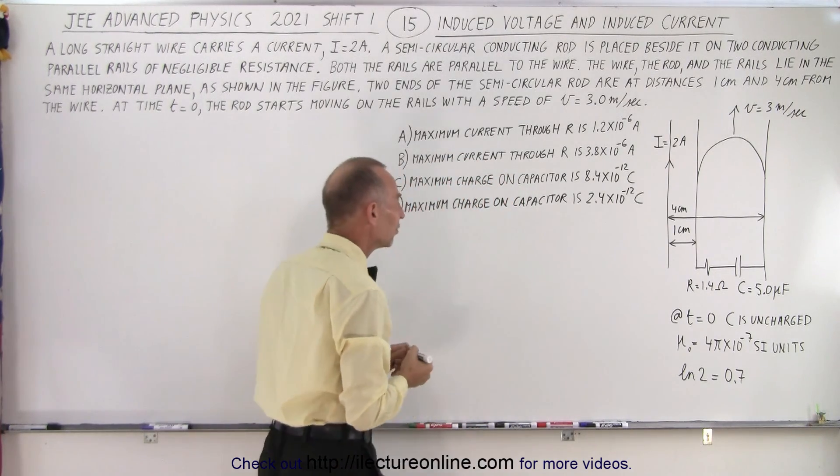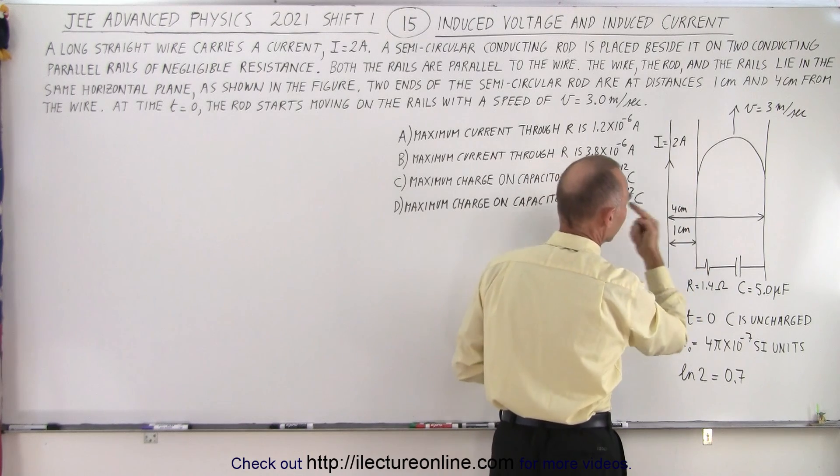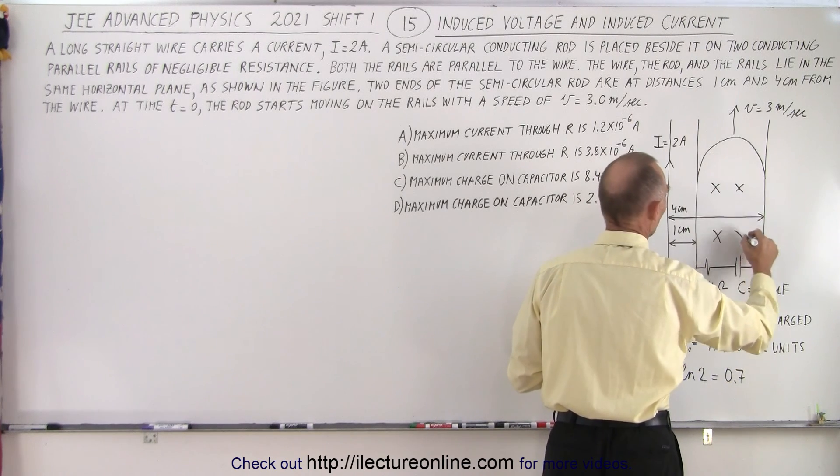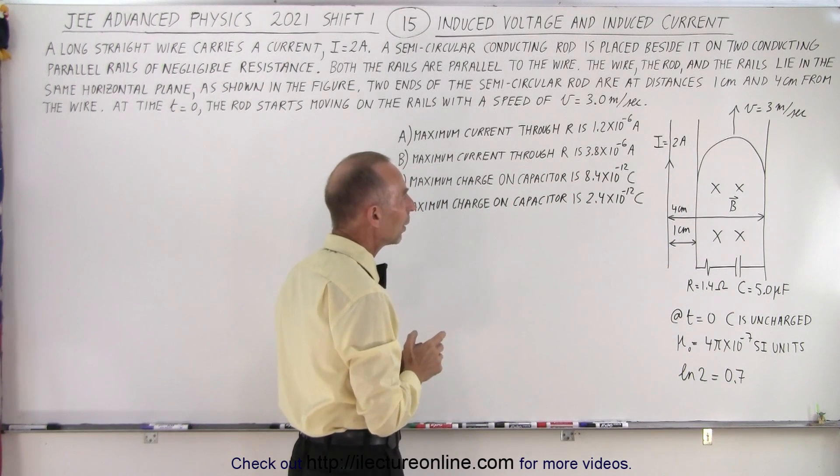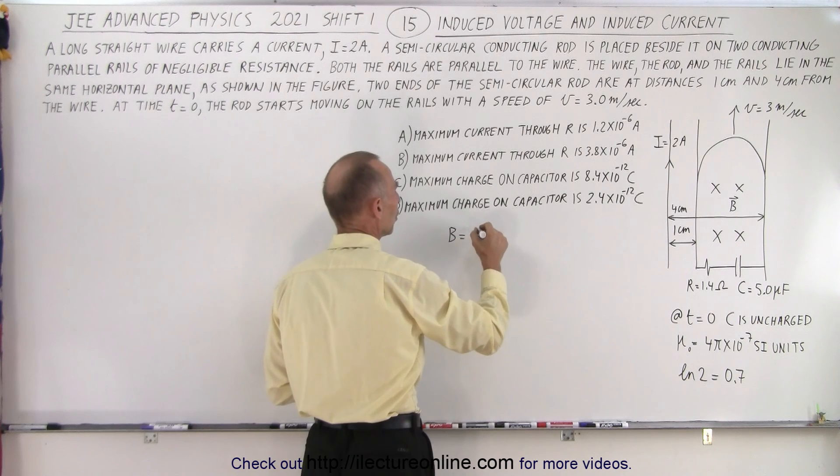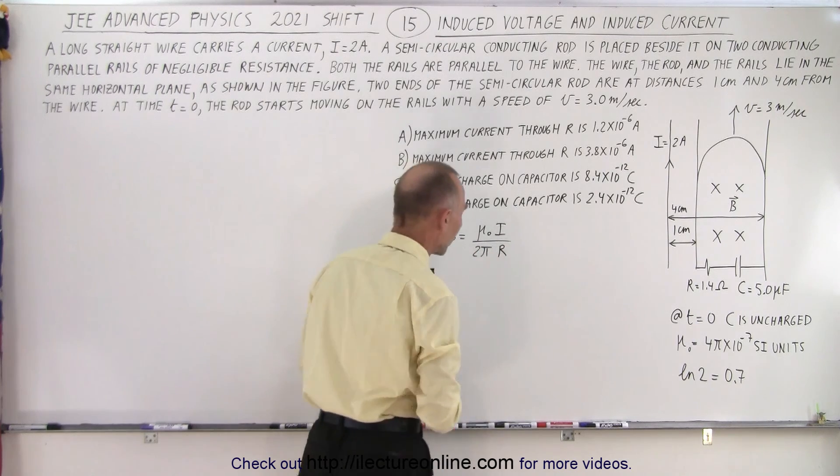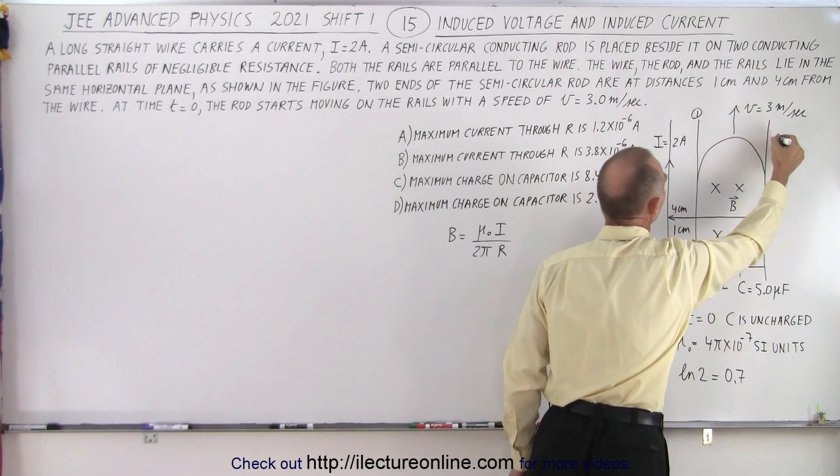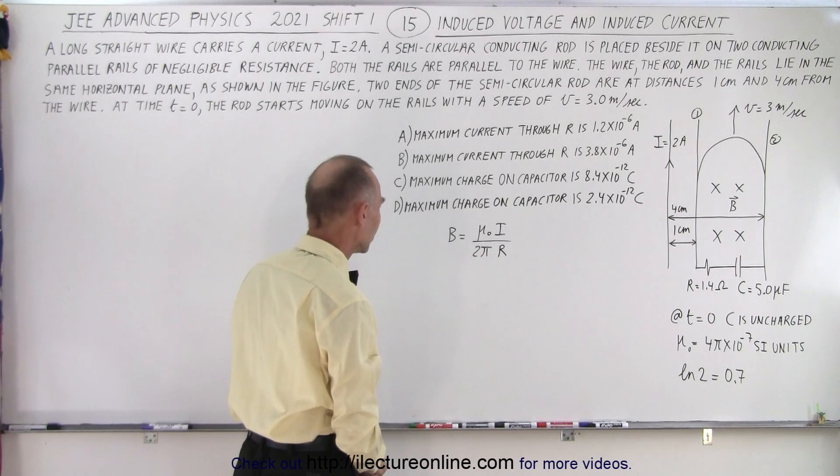Then the next concept we have to think about is the induced voltage. First of all, notice that we have current going through here. That means we have a magnetic field that is in a circular pattern around the wire, which means over here we have a magnetic field that goes into the board. And then what we need to know is we need to know what the strength of that magnetic field is. We can say that the magnetic field B is equal to mu sub knot times the current through the wire divided by 2 pi times the distance away from the wire.